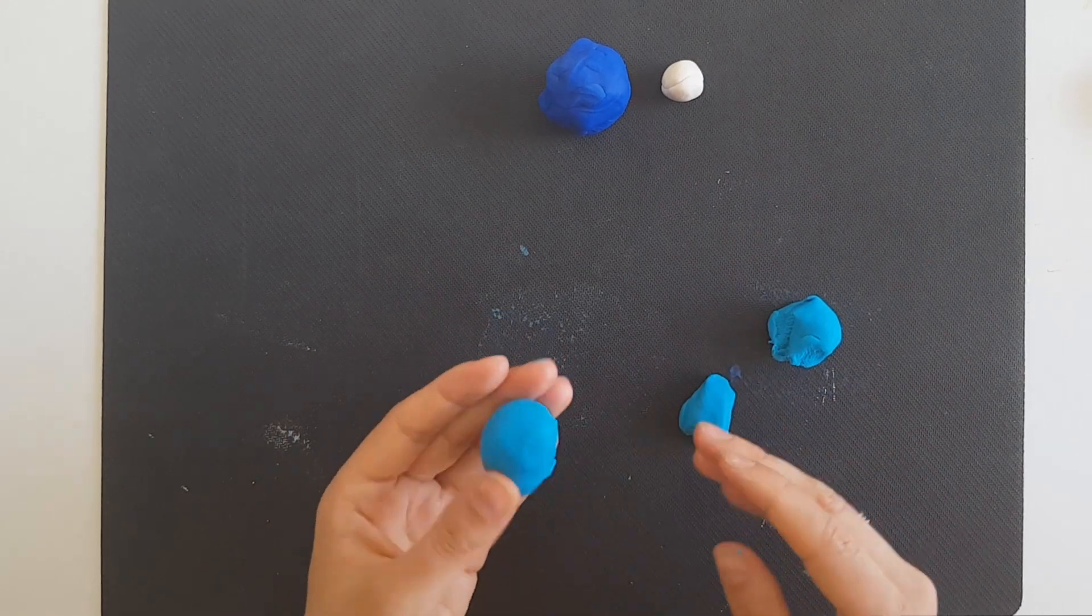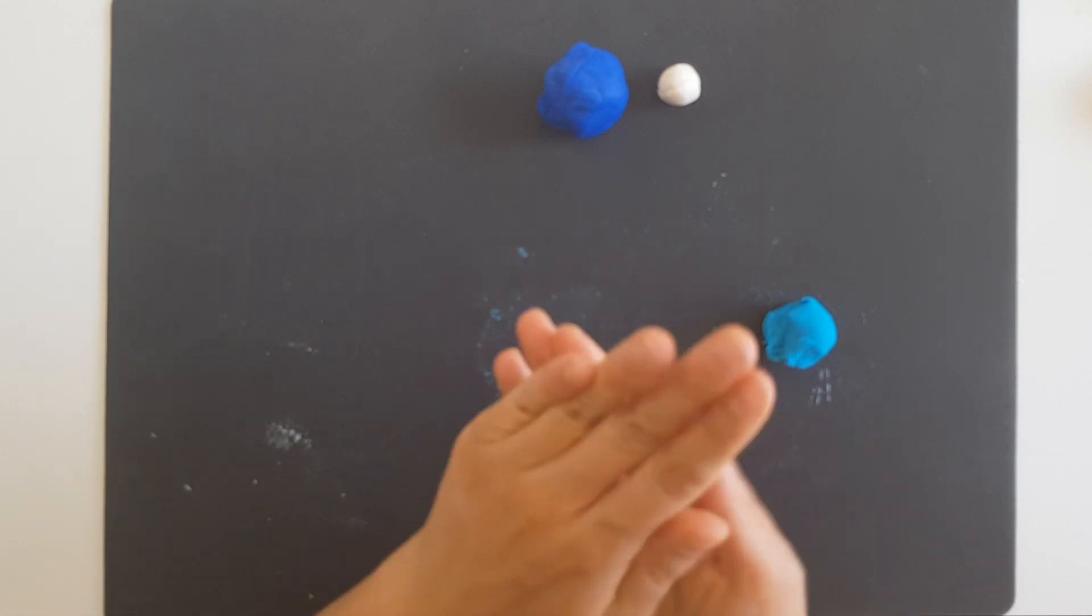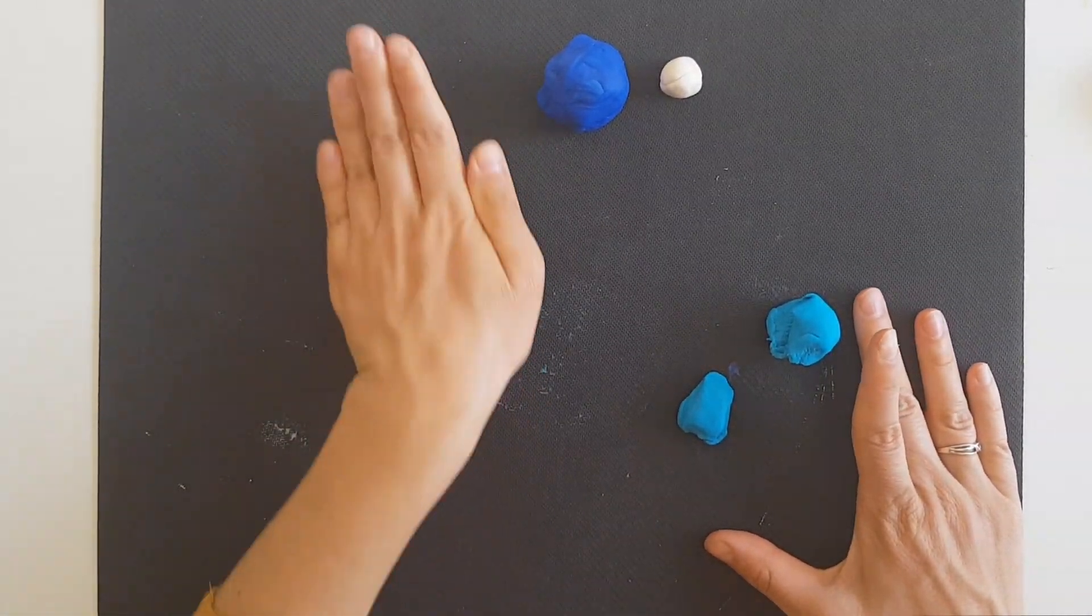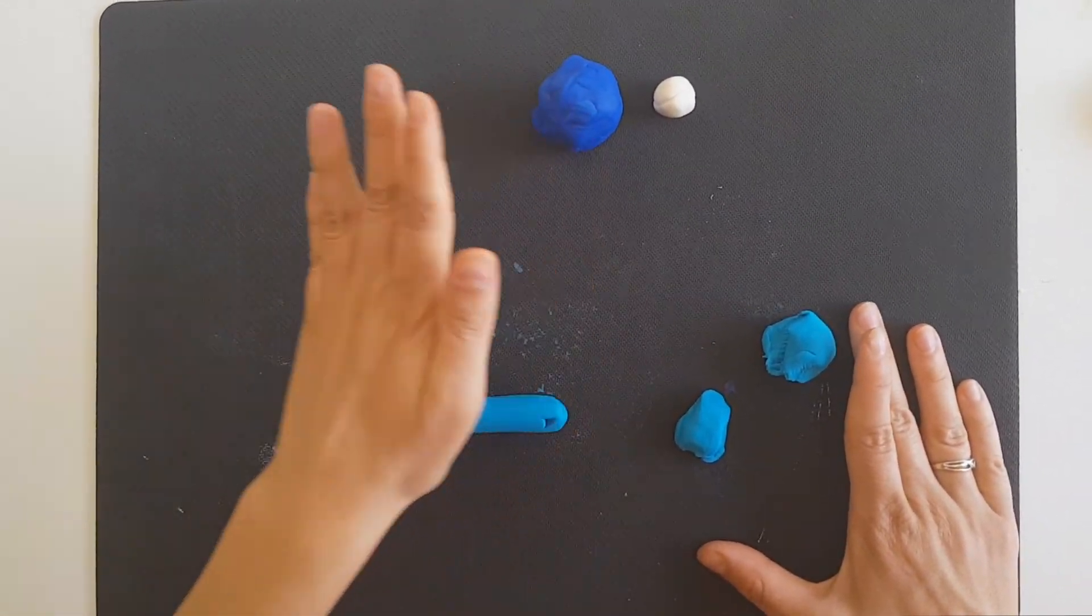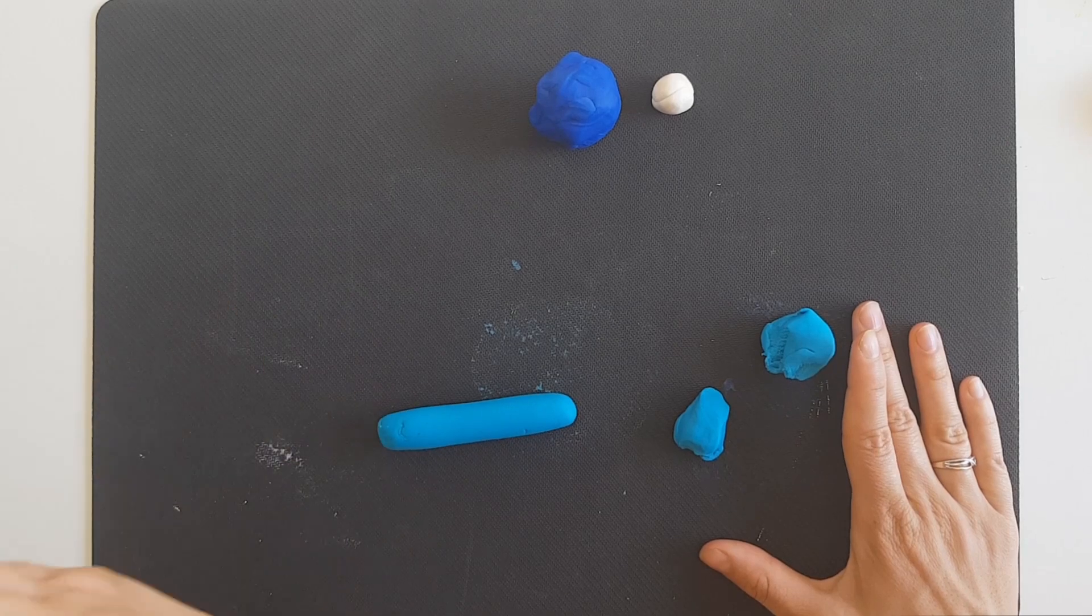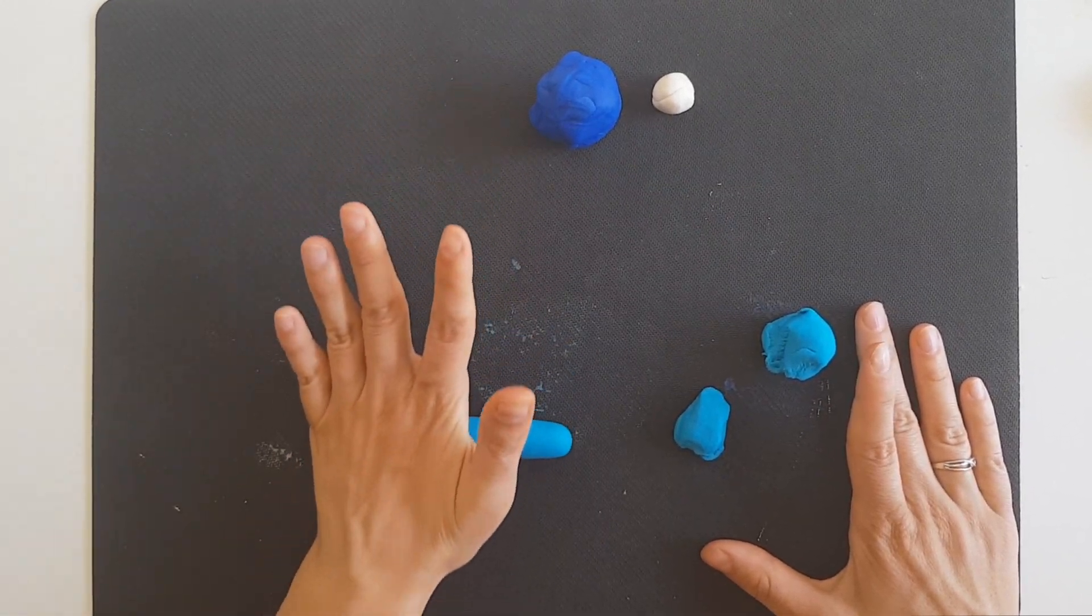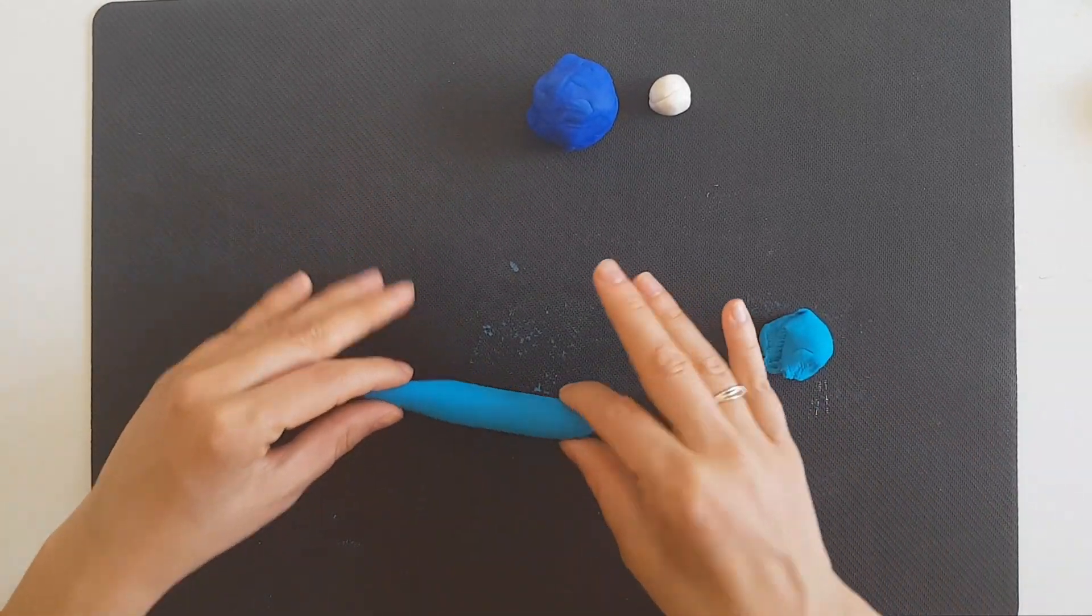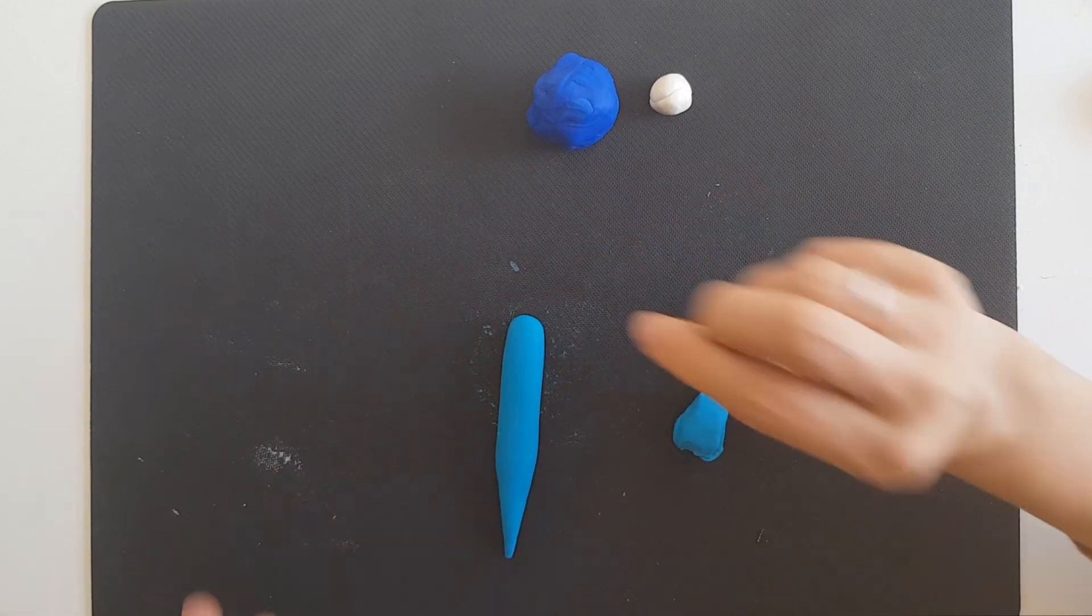So with this one, with the big one, I will shape the main part of the body. First I will make a ball and after it I will start rolling it on the table. Okay, now I will move a bit my hand and now you start rolling only in the end. Do you see what happened? Now we have a really nice shape for the body part.